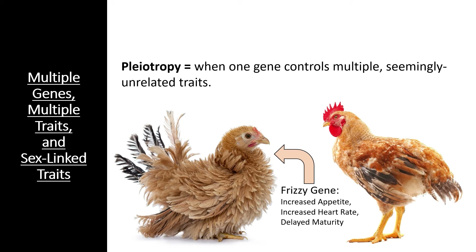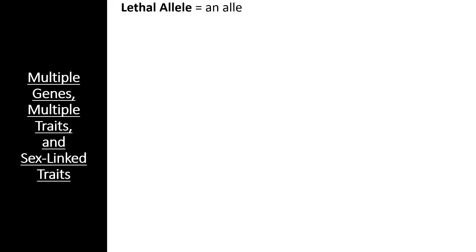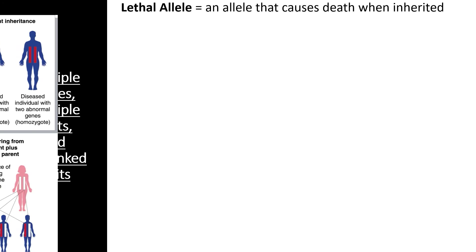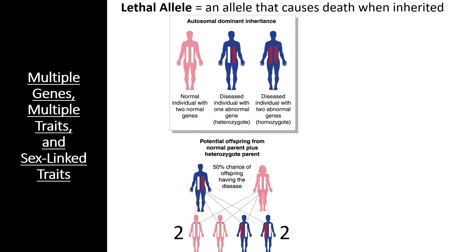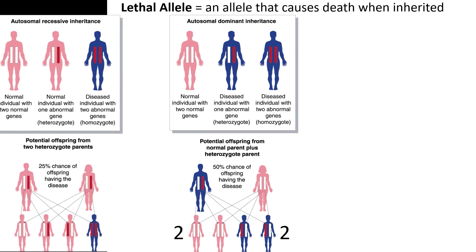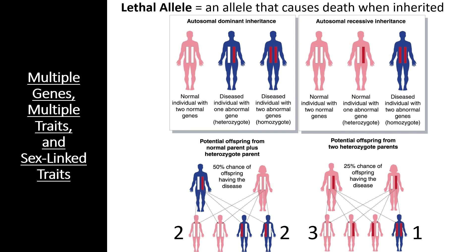Some very peculiar phenotypic ratios are obtained when lethal alleles are involved. Lethal alleles are fatal when they are inherited. Sometimes lethal alleles are dominant, as is the case with Huntington's disease, and sometimes they are recessive, as is the case with cystic fibrosis. When lethal alleles are fatal in embryos, researchers often do not see those offspring. Thus, the phenotypic ratio of the offspring can be greatly affected, giving us statistical evidence that something like a lethal allele is involved.